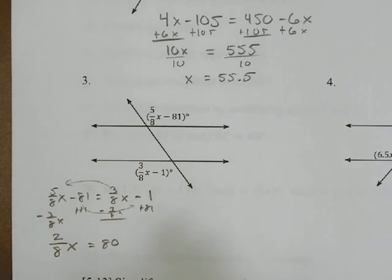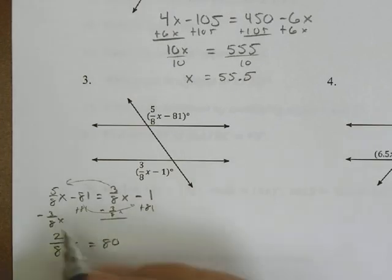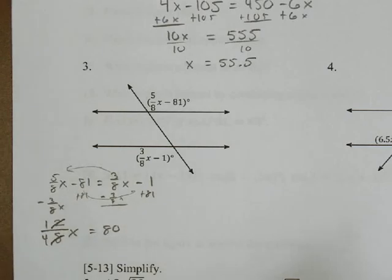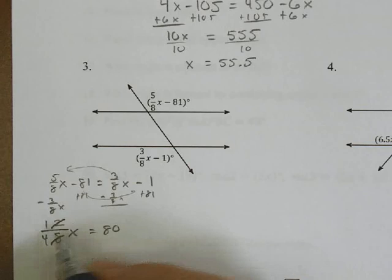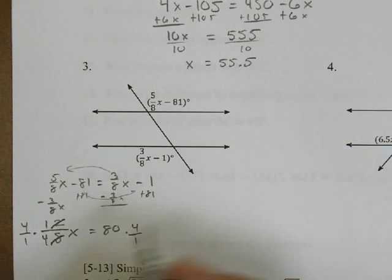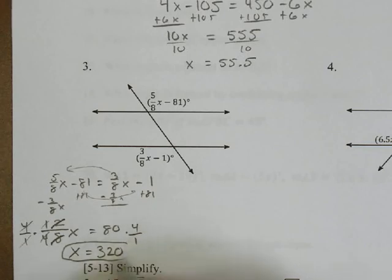Now to get rid of this, I could reduce it first of all, just to make it look easier on myself. 2/8ths can also be reduced to 1/4. And now I can multiply both sides by the reciprocal, multiply by 4 over 1. In this case here, the 4's now cancel, the 1's now cancel, and I'm left with just the x on the side. And over here I have 80 times 4, which is 320 for my solution for number 3.